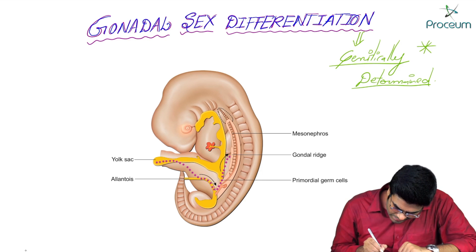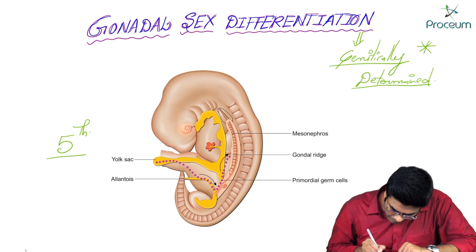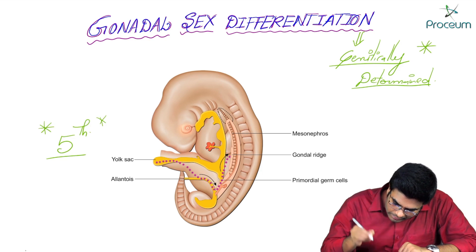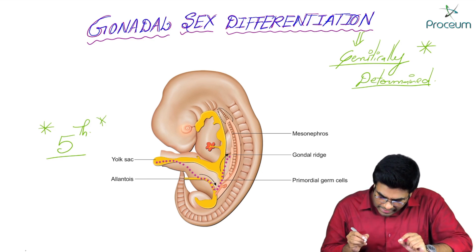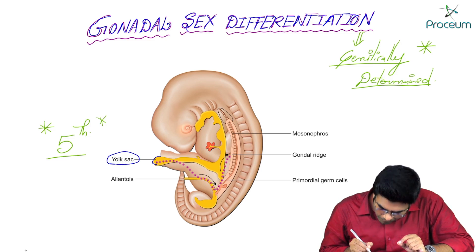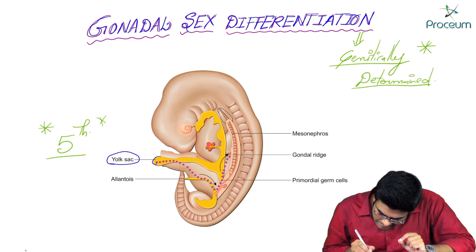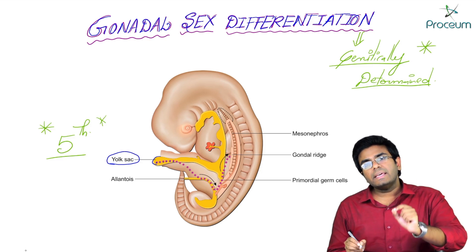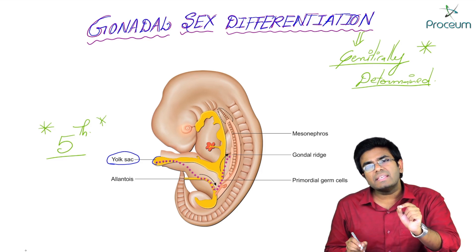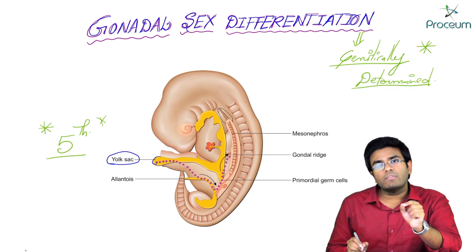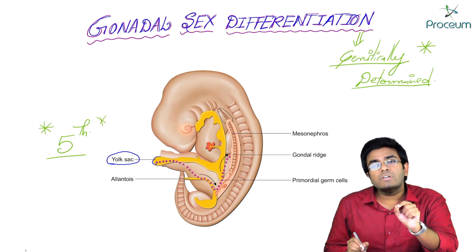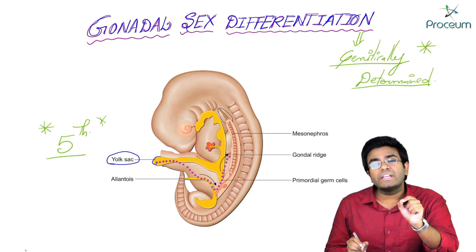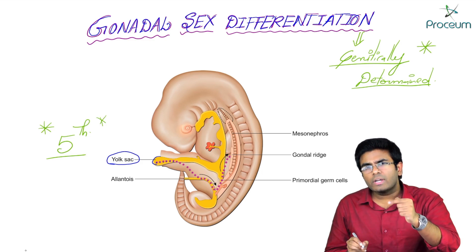During the fifth week of gestation — this is a very important timeline — the primordial germ cells will move from the yolk sac. As shown in this diagram, from the yolk sac the primordial germ cells, shown in purplish color, move via the dorsal mesentery to the posterior body wall. There, the primordial germ cells stimulate the formation of longitudinal ridges.